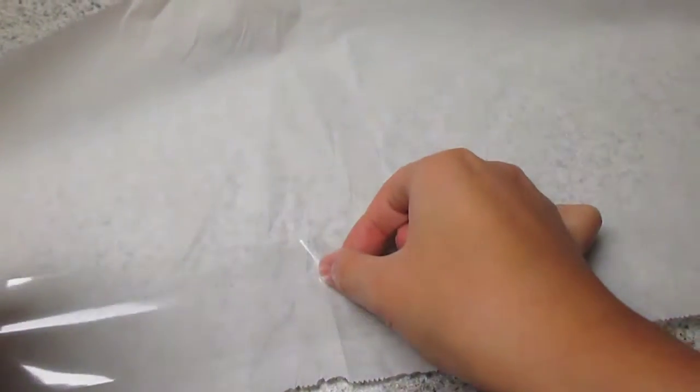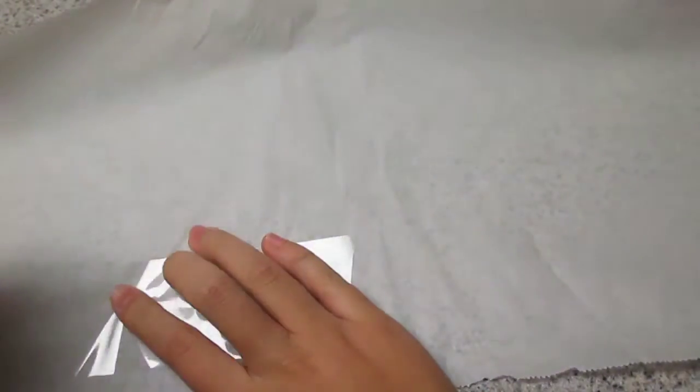So you're also going to need some scissors. The first step is to take your packing tape and just lay a piece straight on the baking paper. Now cut it.